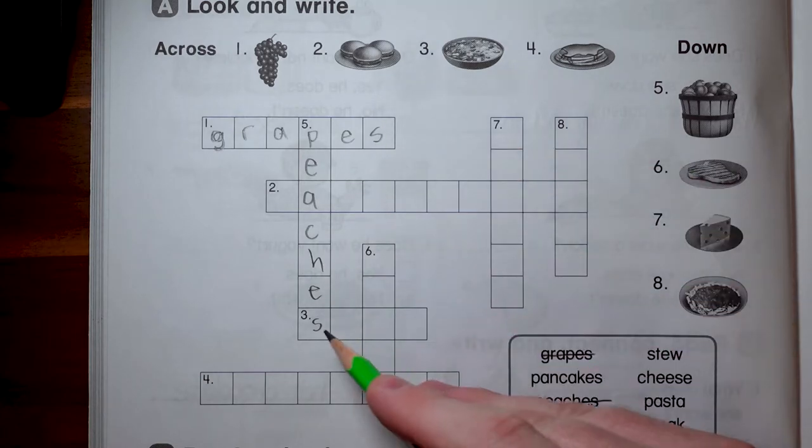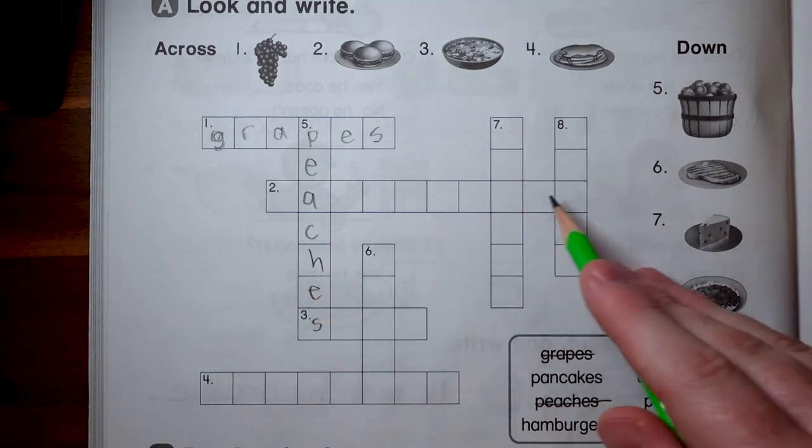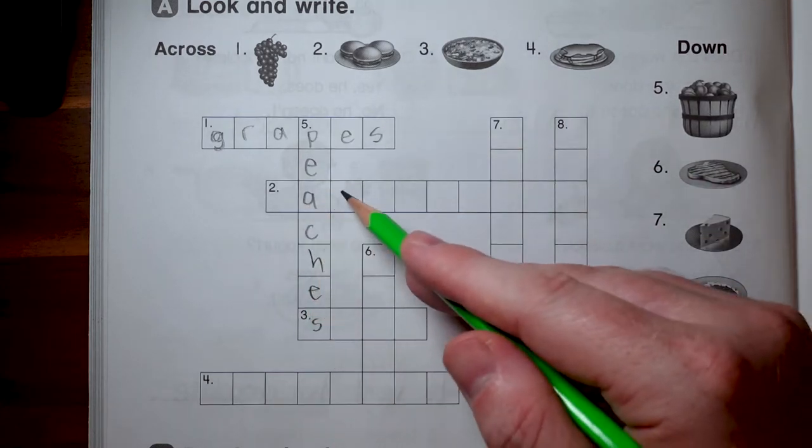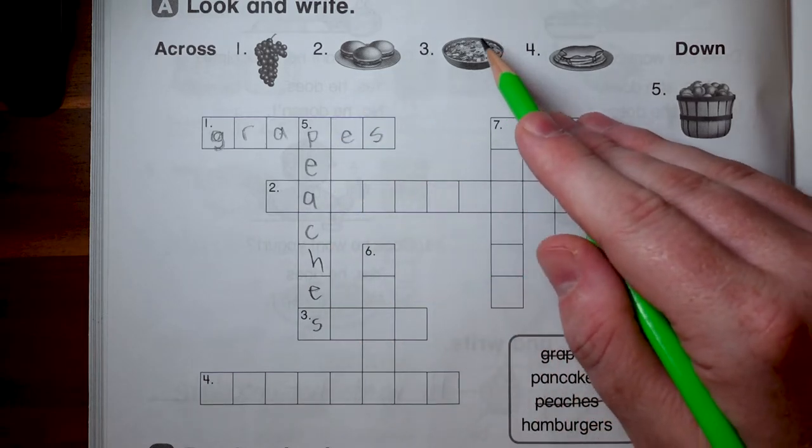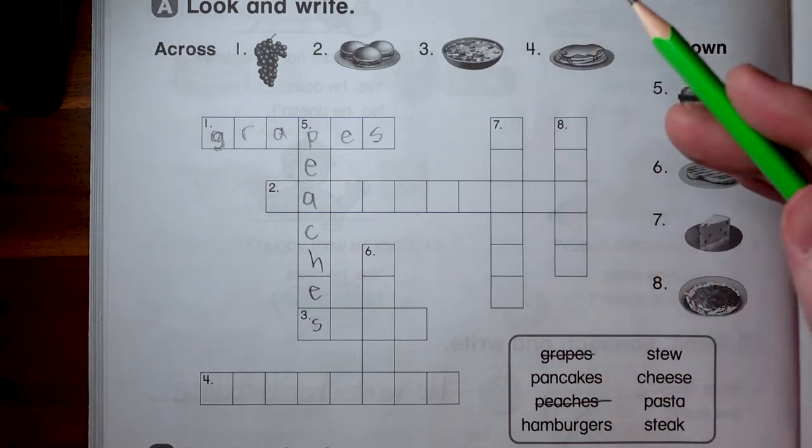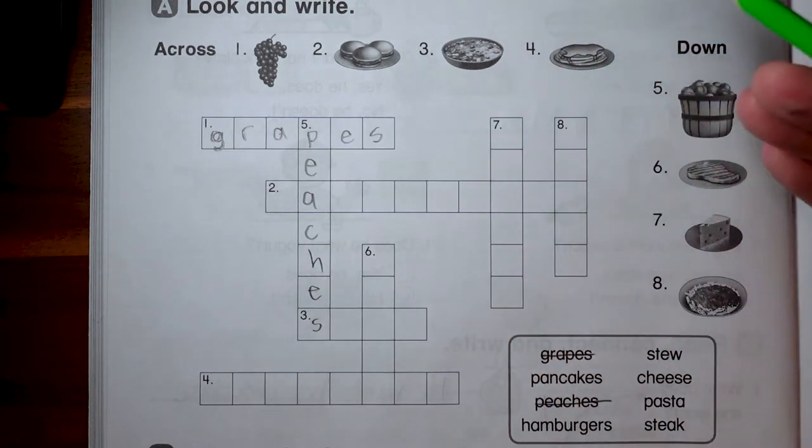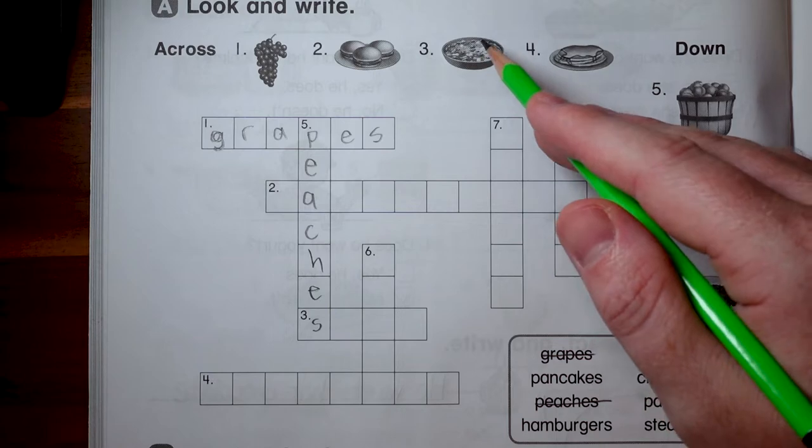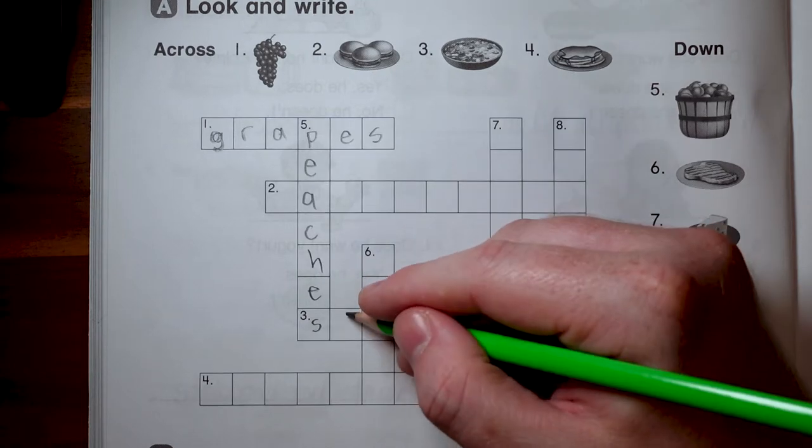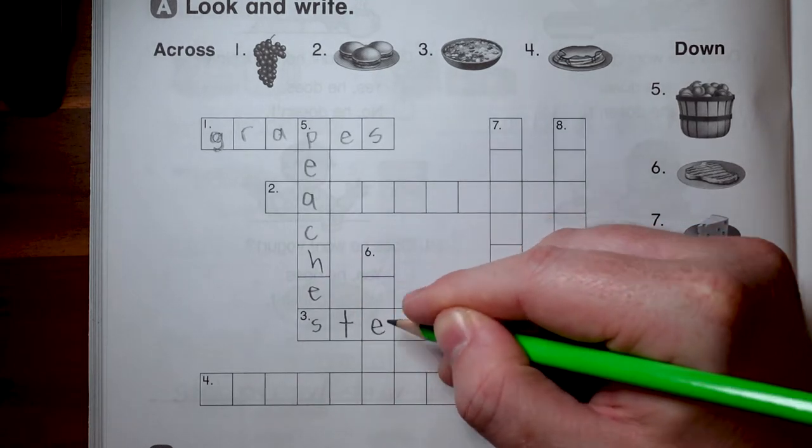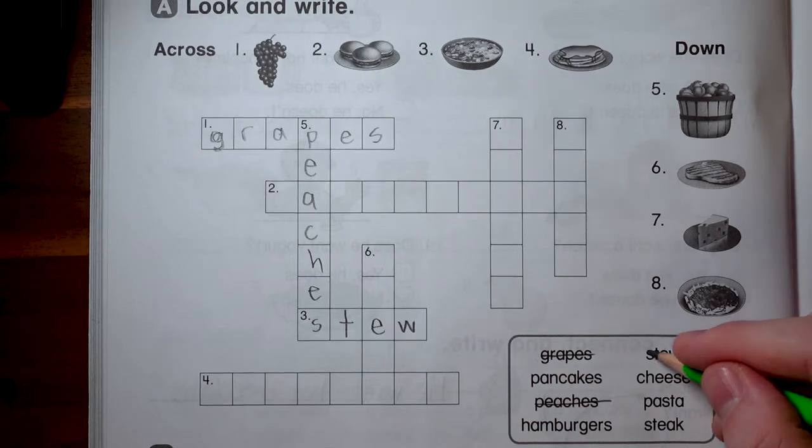So number five going not across but down is here. Is that either pancakes or peaches or pasta? Definitely peaches. So write P-E-A-C-H-E-S. Peaches. Cross it out. Okay, and now we could do number three or number two because we have a little bit of help. I'm going to do number three because I like to start with these first words. Here's number three. It looks kind of like cereal, kind of like soup. I don't know but it starts with an S. So let's look in here. Stew or steak? Definitely stew. S-T-E-W. Stew's done.